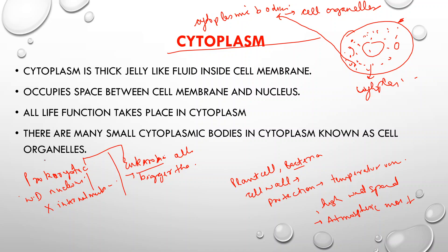In prokaryotic cells there is no internal membrane, but in eukaryotic cells there is a membrane-bound nucleus. Eukaryotic cells also contain cell organelles besides the nucleus, such as mitochondria, endoplasmic reticulum, and Golgi bodies. Plant cells additionally contain specialized organelles like chloroplast, large vacuoles, and a thick laminar cell wall.